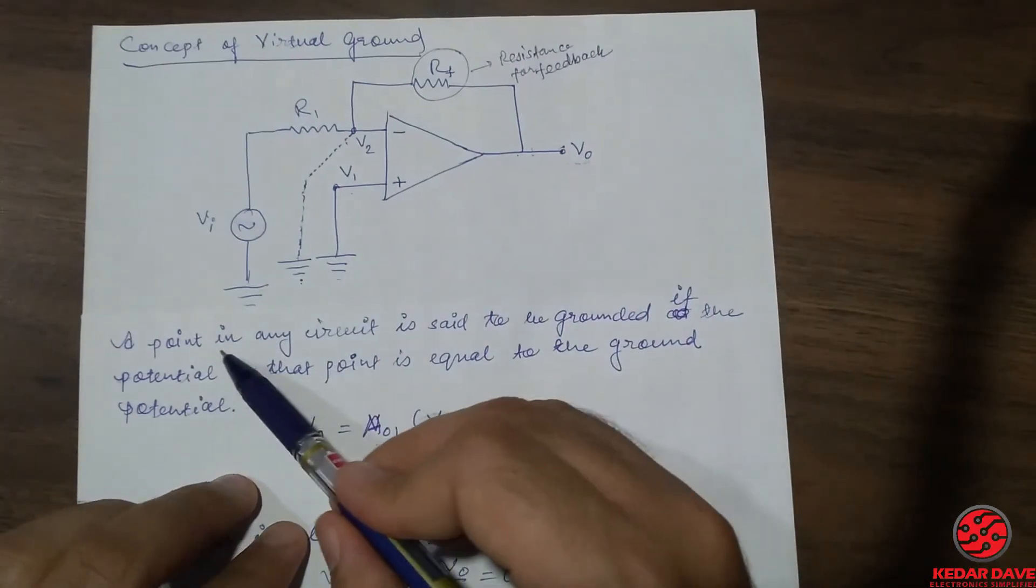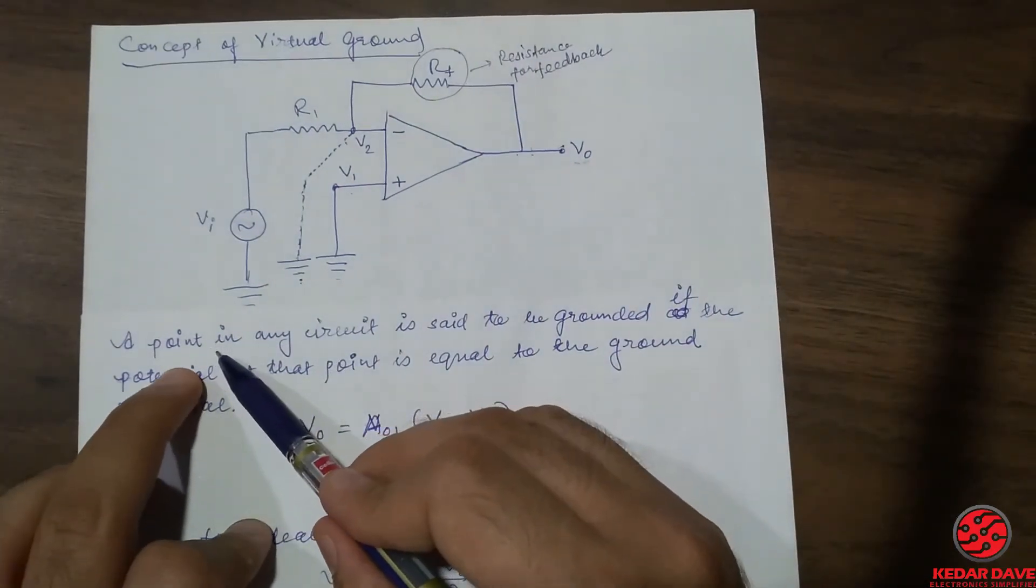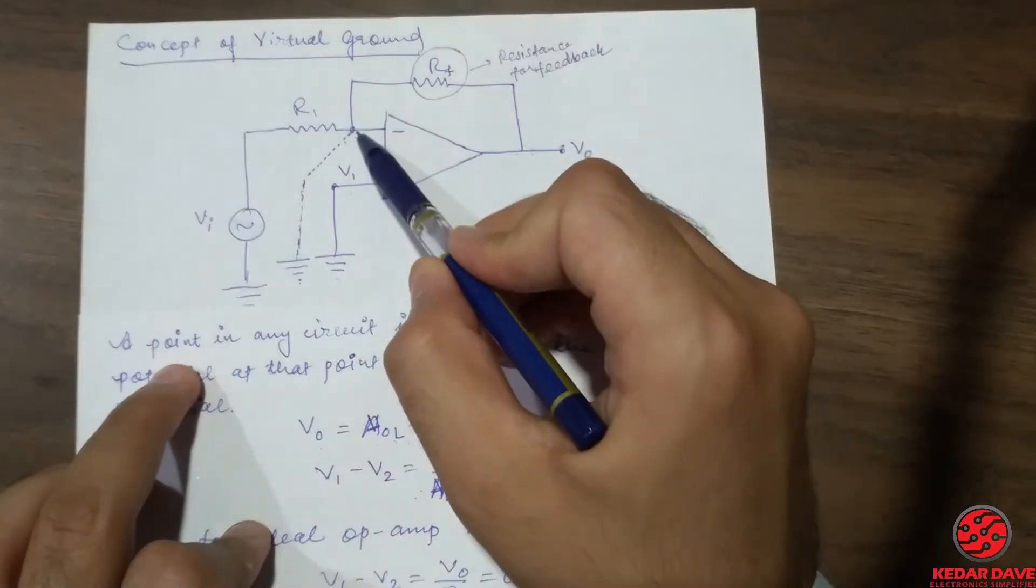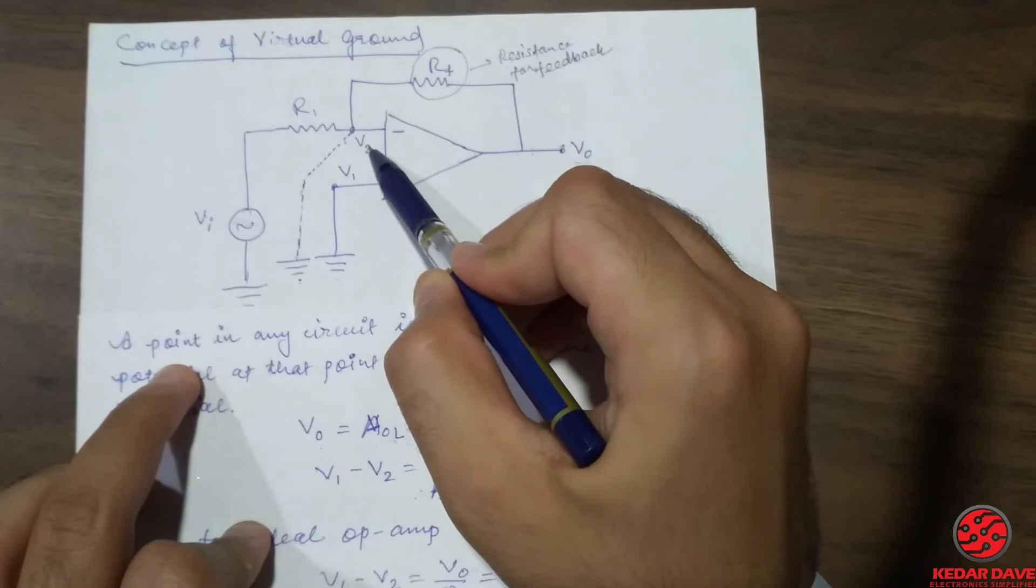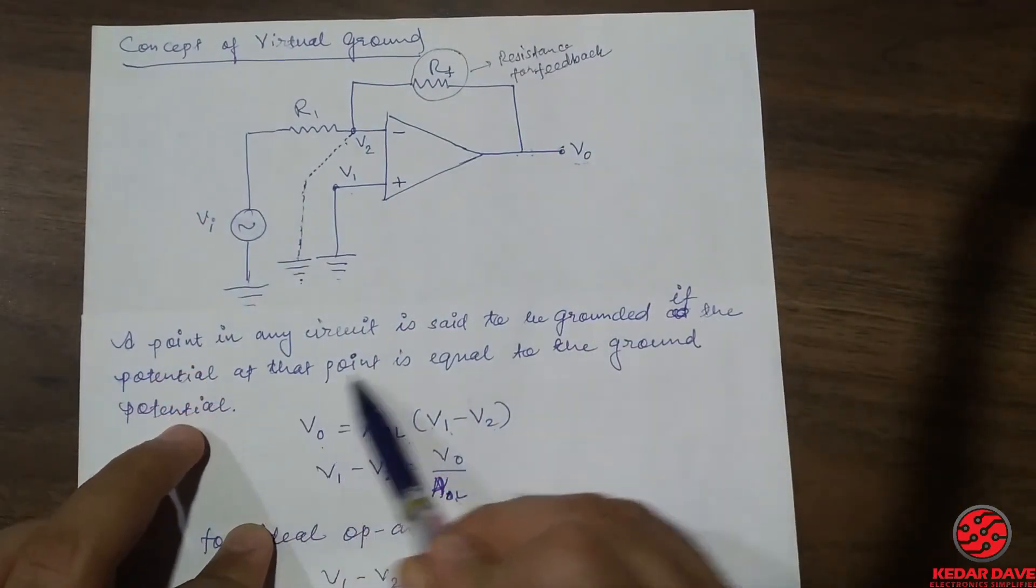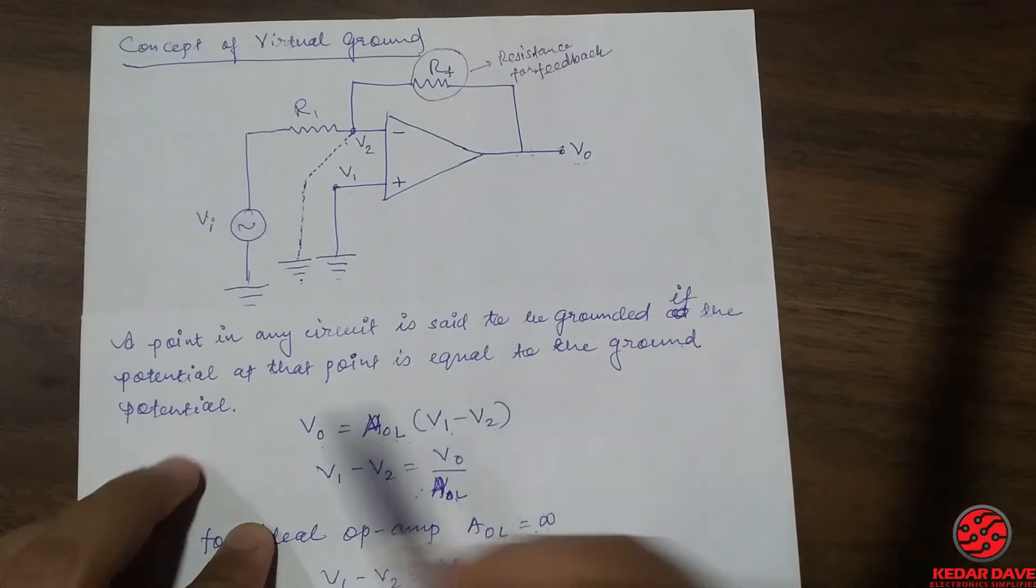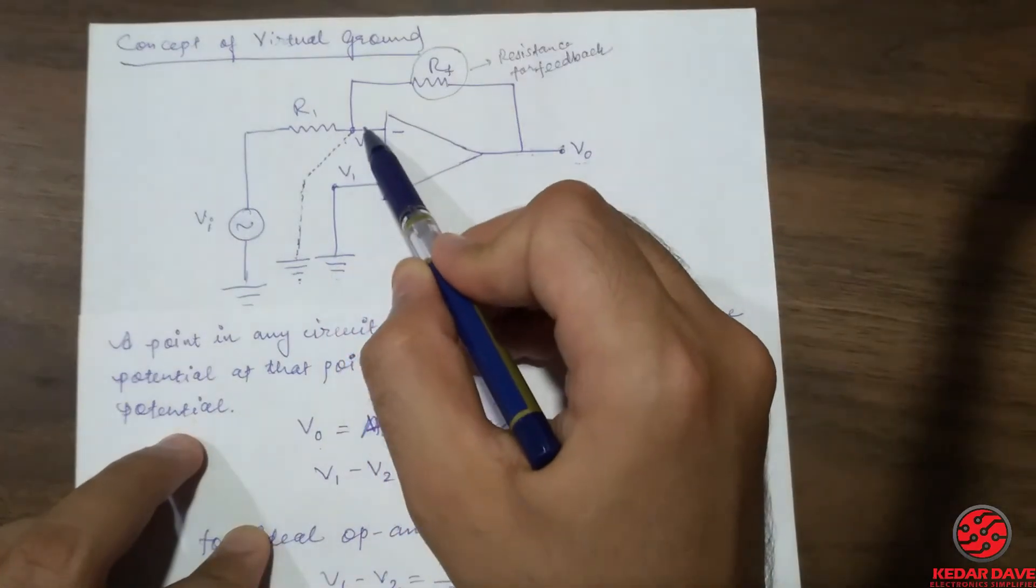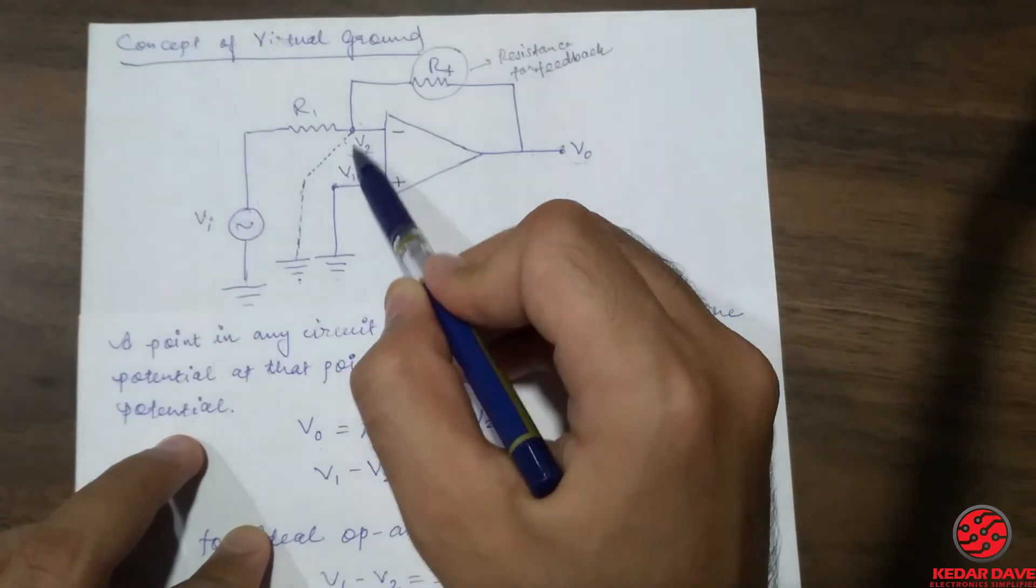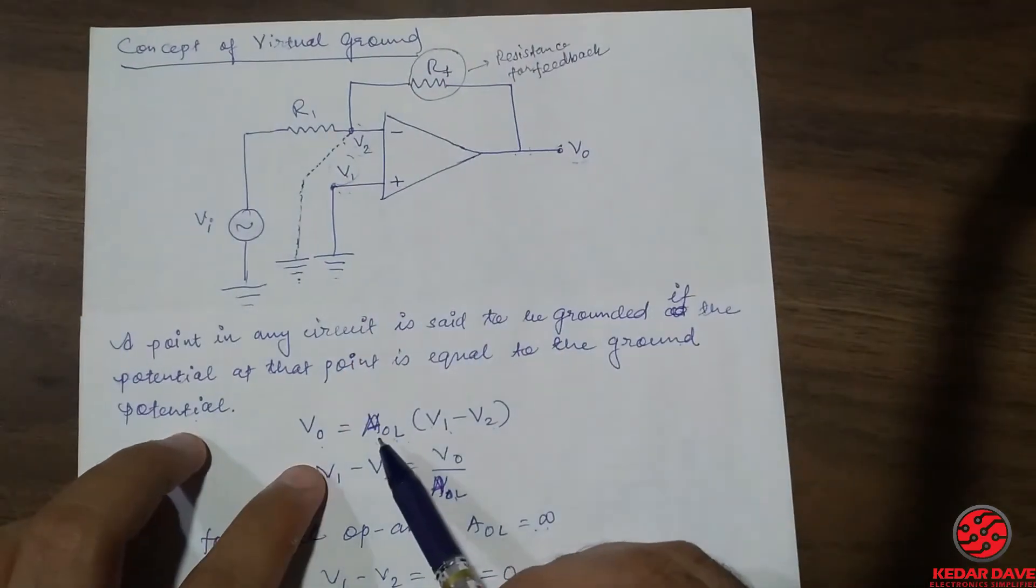So let's learn these things. A point in any circuit, for our circuit that is V2 point, is said to be grounded if the potential at that point is equal to the ground potential. So this position is equal to the V1 position that we are going to learn in this concept.